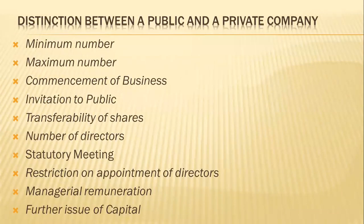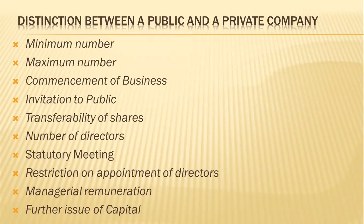Let us understand the difference between a public company and a private company. Point one — minimum number of members: the minimum number of persons required to form a public company is seven, whereas in a private company it is only two. Point two — maximum number of members: there is no limit as to the maximum number of members of a public company, but a private company cannot have more than 50 members, excluding past and present employees.